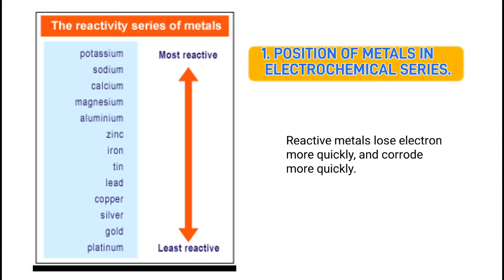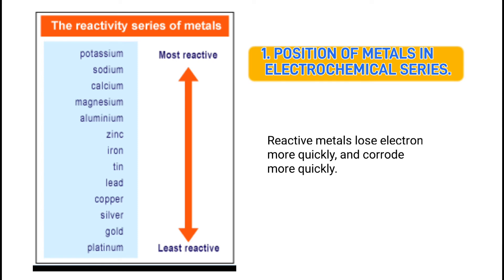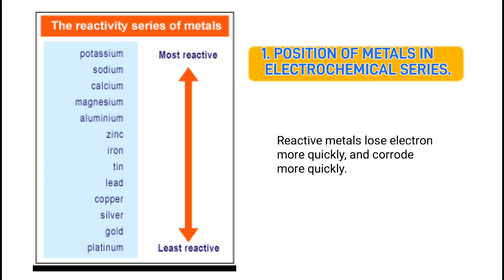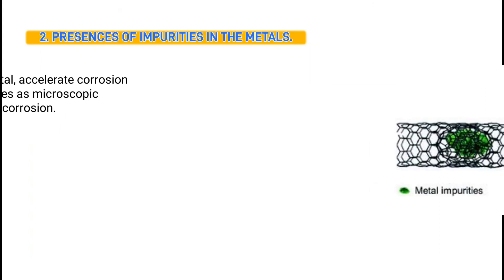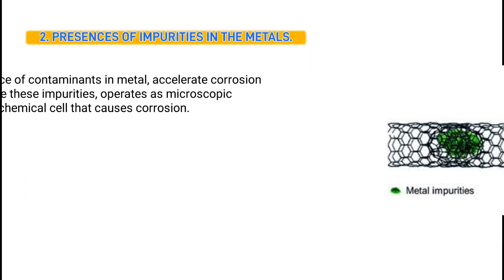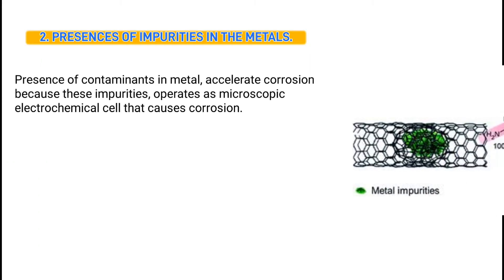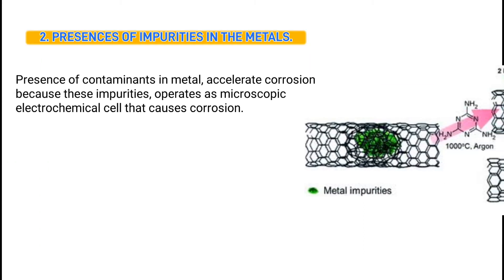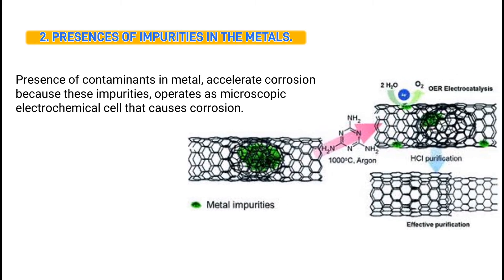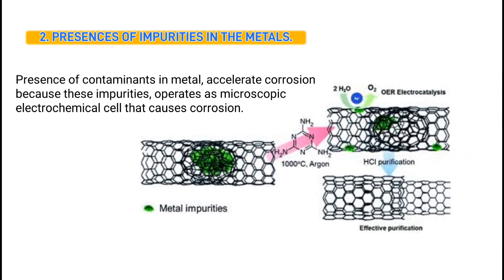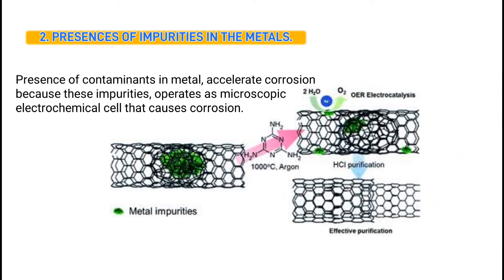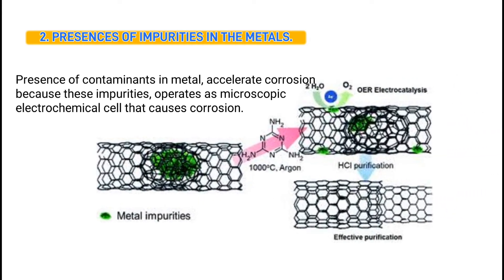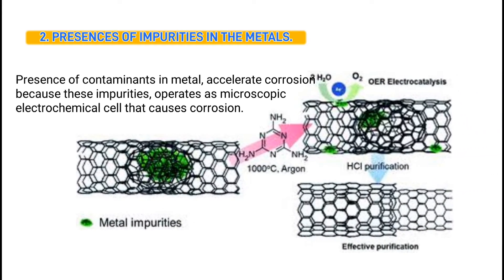Factors affecting corrosion: one, position of metals in the electrochemical series — reactive metals lose electrons more quickly and corrode more quickly. Two, presence of impurities in the metals — contaminants in metals accelerate corrosion because these impurities operate as microscopic electrochemical cells that cause corrosion.